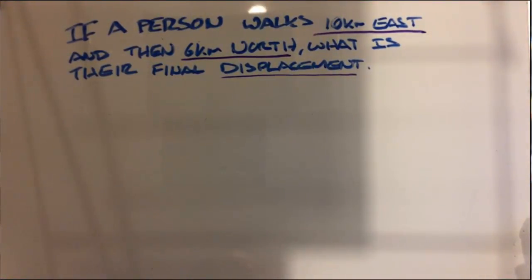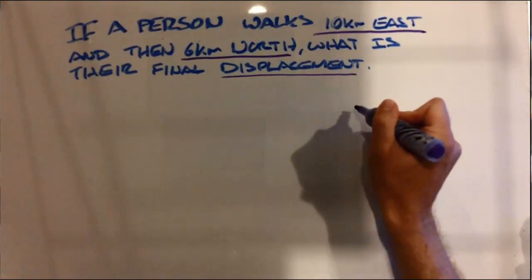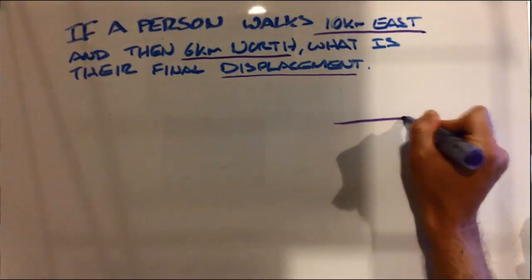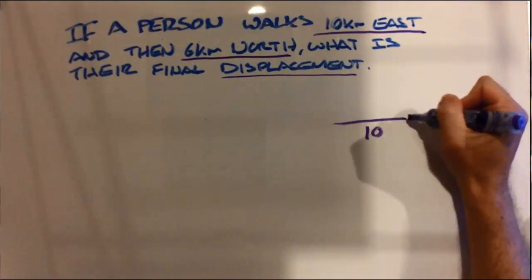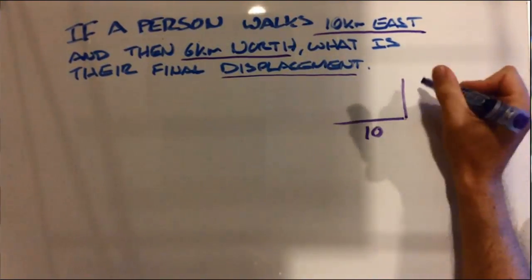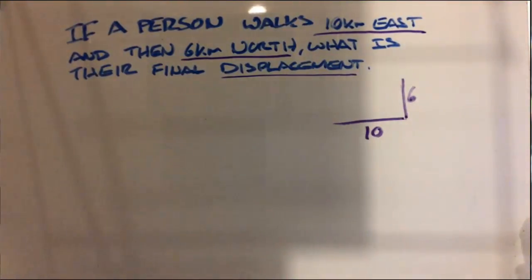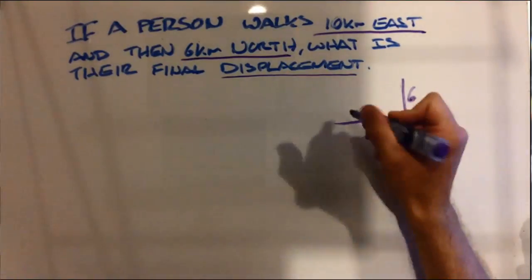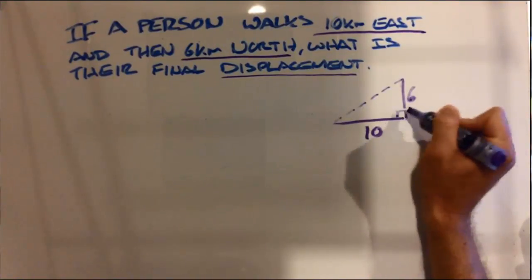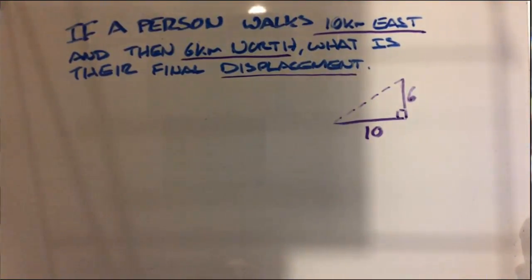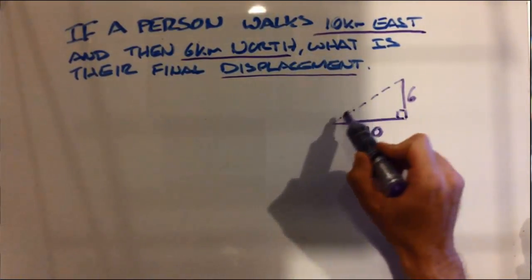For a question like this, it's quite handy to map out what's occurring. A person is walking 10 kilometers east and 6 kilometers north. What we can see is that we have a right-angle triangle, and the question is asking us to find our displacement.